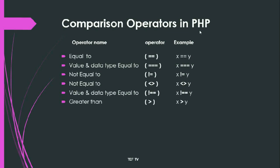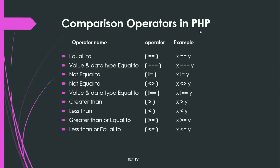Then we have greater than (>). This operator is used to compare whether the value of x is greater than y or not. When the value of x is greater than y, it will generate result as one; otherwise it will generate an empty string. Then we have less than (<). When the value of x is less than y, it will print one; otherwise it will print an empty string.